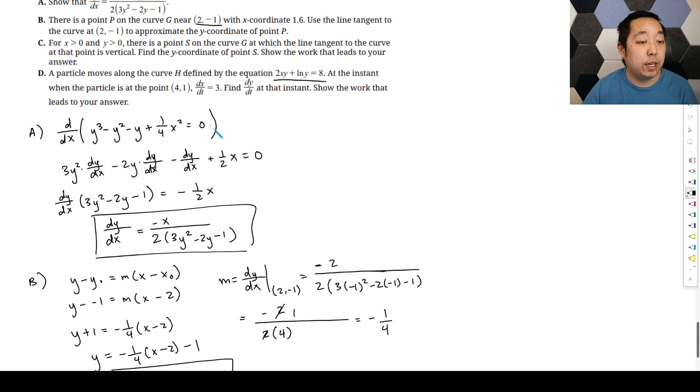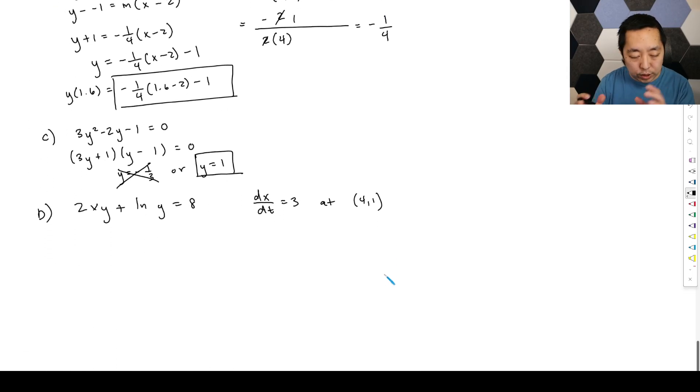Just double check if I read that correctly, 4, 1. Okay, so we're just gonna take the derivative with respect to time of this expression right here. So remember, it's related rate. So everything has a chain rule in it unless there's a t in it. So everything has changes.